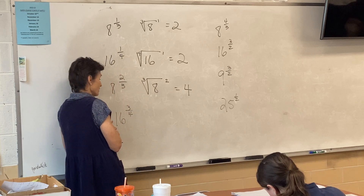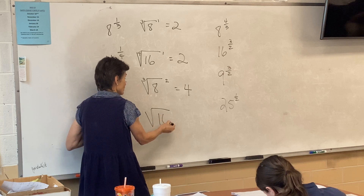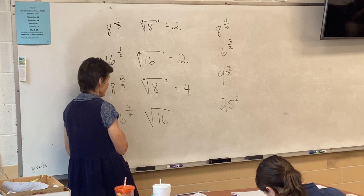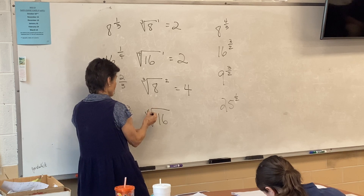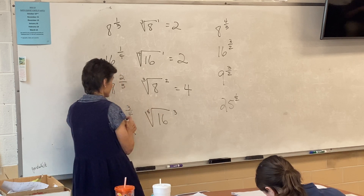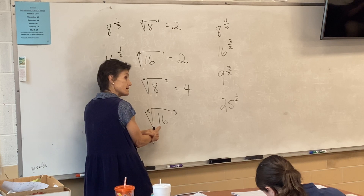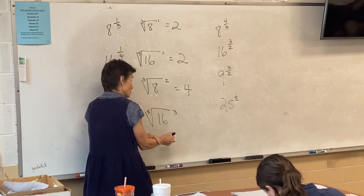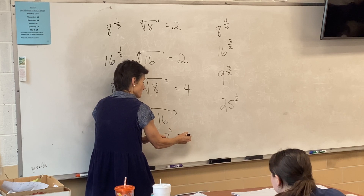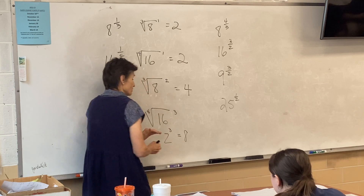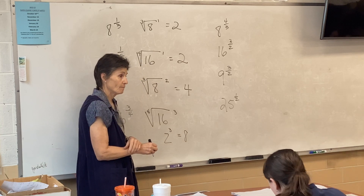Same thing here — it's a radical, and under the radical goes the number, 16. The exponent tells me the root and the power. The denominator gives me the root, so the fourth root of 16 is two. Two cubed is eight — two times two times two. That's your answer.